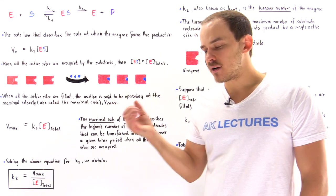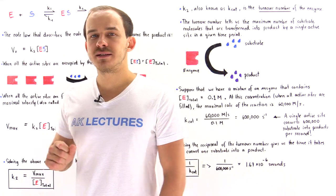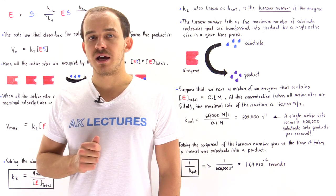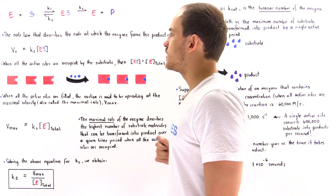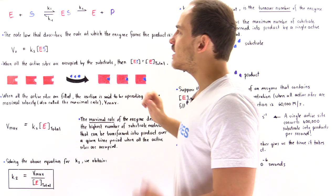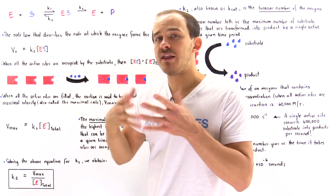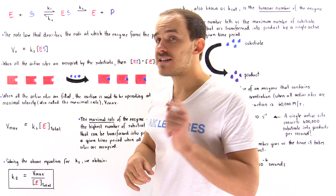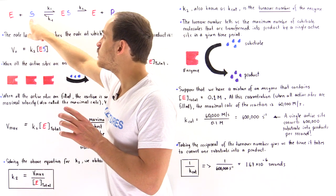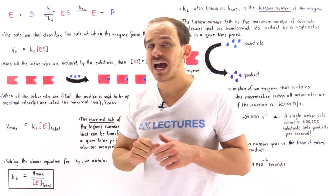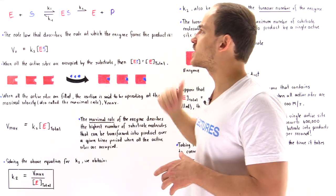Suppose we have a beaker containing a single type of enzyme, and we begin to add the substrate that the enzyme catalyzes. Initially, on the reactant side we have the enzyme by itself and the substrate by itself. A reaction takes place with rate constant K1, in which the substrate binds onto the active site of the enzyme to form the intermediate molecule — the enzyme-substrate complex.